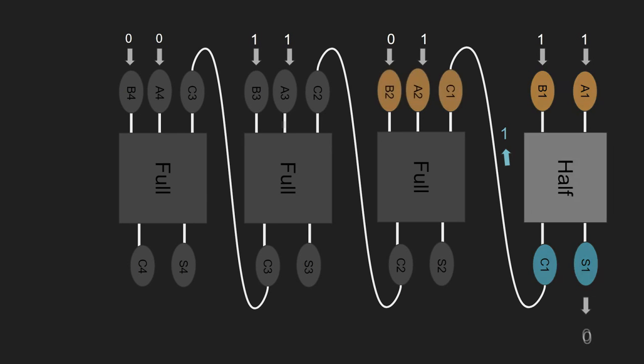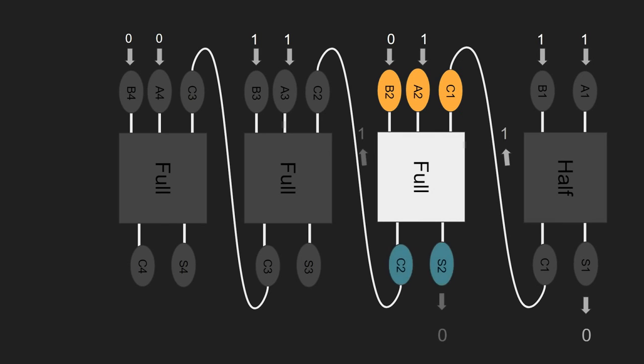And that gets fed into the next full adder. And that one there, you've got 0 and 1 from the A and B bits, plus that 1 coming in from the carry in. So, 0 plus 1 plus 1 is 2, which in binary is 1, 0. So, your 0 stays in your sum, and then again your 1 gets carried out to the next one.